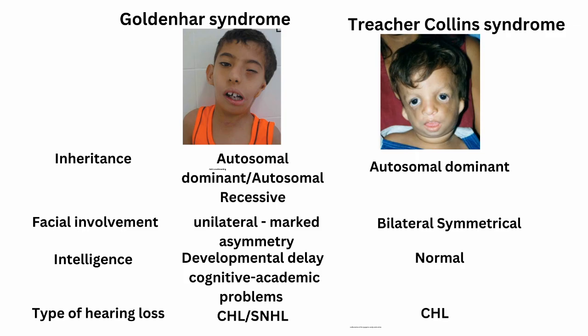There are some differences between Goldenhar syndrome and Treacher Collins syndrome. Mainly in inheritance — Treacher Collins is purely autosomal dominant, whereas Goldenhar syndrome can also be autosomal recessive. Additionally, hearing loss is always conductive in Treacher Collins, but in Goldenhar syndrome it can be conductive, sensorineural, or mixed.